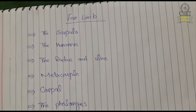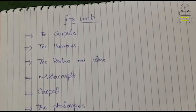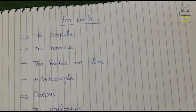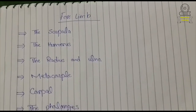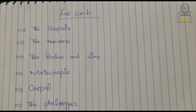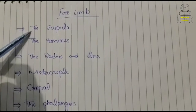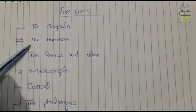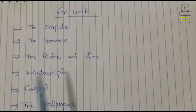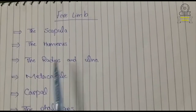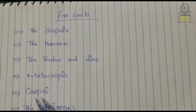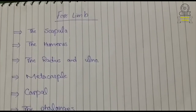Today we will discuss the forelimb, which contains mainly six bones. The first is the scapula bone, the second is the humerus bone, and the third is the radius and ulna — two bones fused with each other.